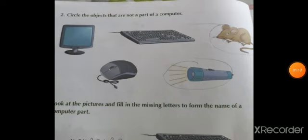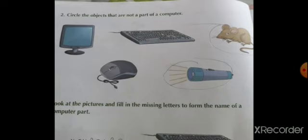Now let's move to page number 20, question number 2: Circle the objects that are not a part of a computer. You have to circle torch and mouse — the mouse which you see at your home.